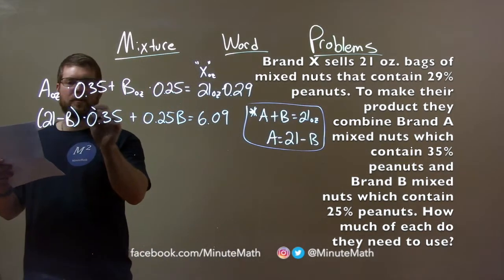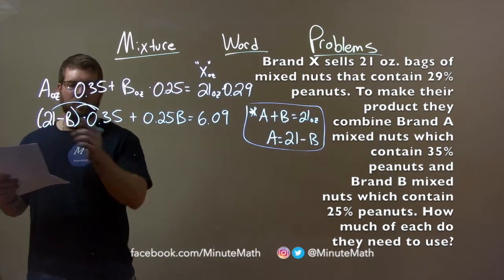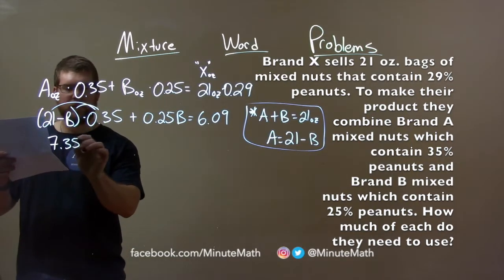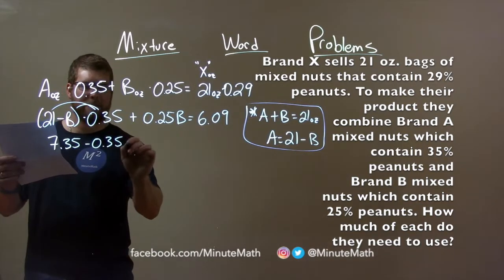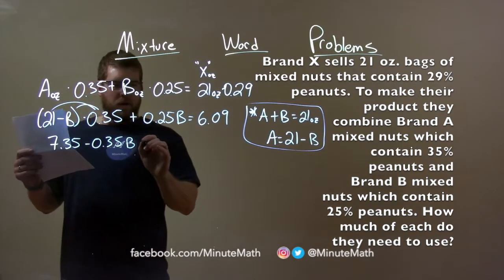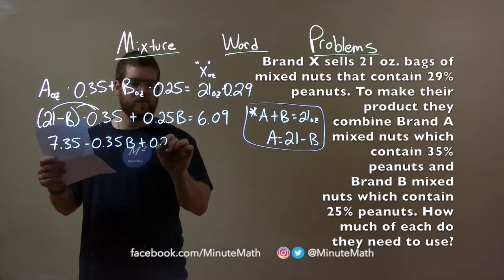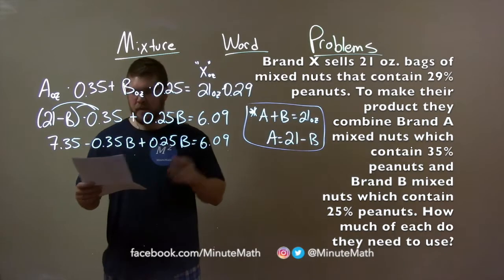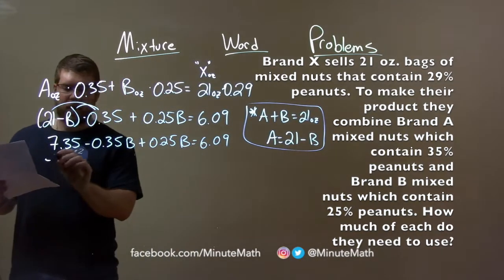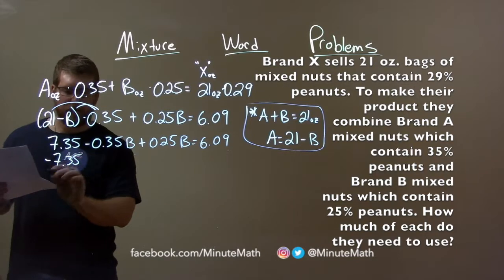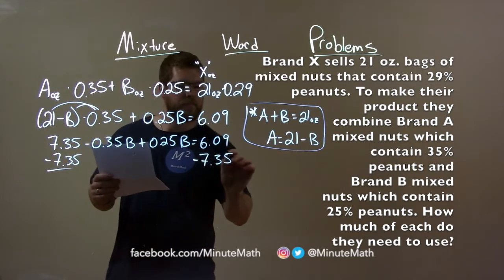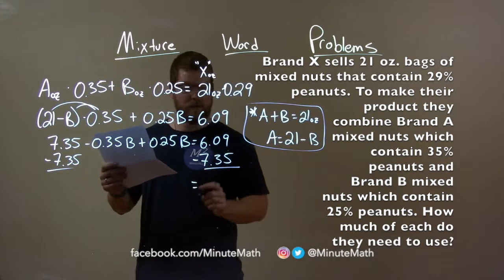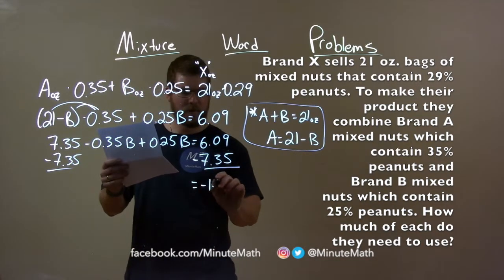Keep going. We distribute here, 0.35 to both parts. Well, 0.35 times 21 is 7.35 minus 0.35 B plus 0.25 B equals 6.09. Let's get B's by itself. So, we subtract 7.35 to both sides. And we're left with, on the right here, 6.09 minus 7.35, a negative 1.26.